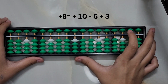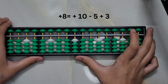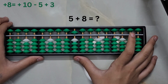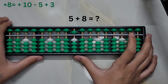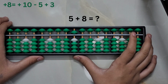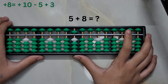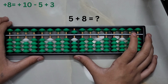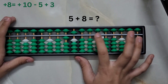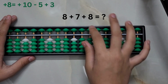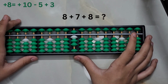The combination formula for adding 8 is plus 10 minus 5 plus 3. Let's look at this formula with an example: 5 plus 8. It cannot be added directly, and the big friend formula for adding 8, which is plus 10 minus 2, cannot be used because we do not have two beads in the lower deck to subtract. The small friend formula cannot be used because the number we want to add is 8, which is greater than 5. So we will take help from the combination formula: plus 10 minus 5 plus 3. Answer is 13.